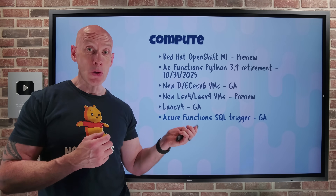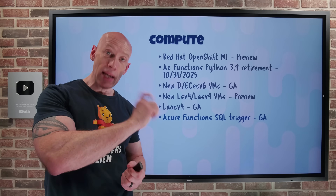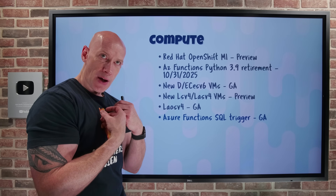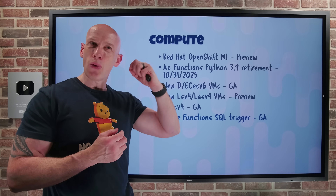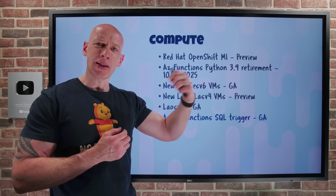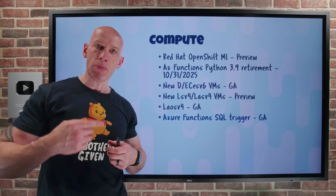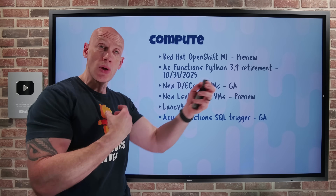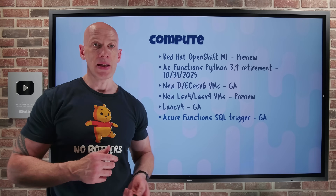Azure Functions SQL trigger has gone GA for the consumption plan. I can now trigger my serverless Azure function when there's an update to a table — inserts, creates, and deletes in my SQL table can trigger a piece of logic defined in my Azure function. It also has input/output binding, so I can do additional read/write actions on my SQL database.